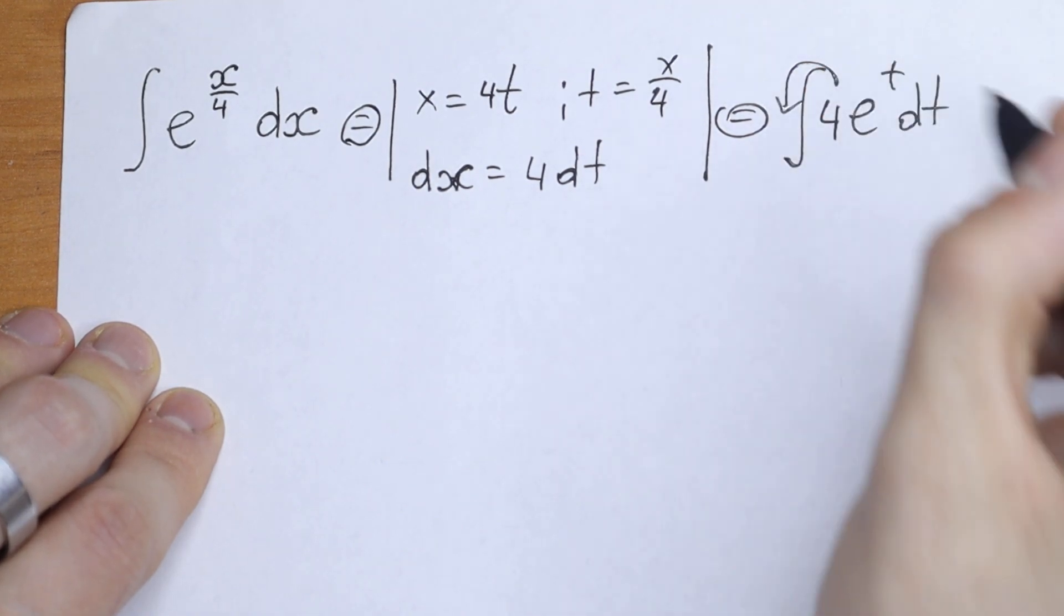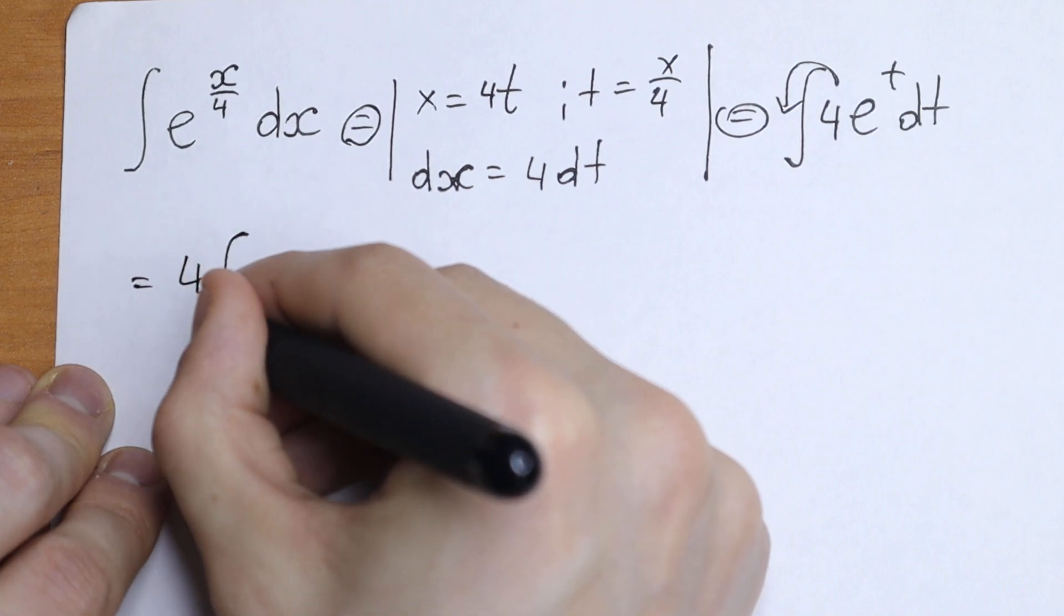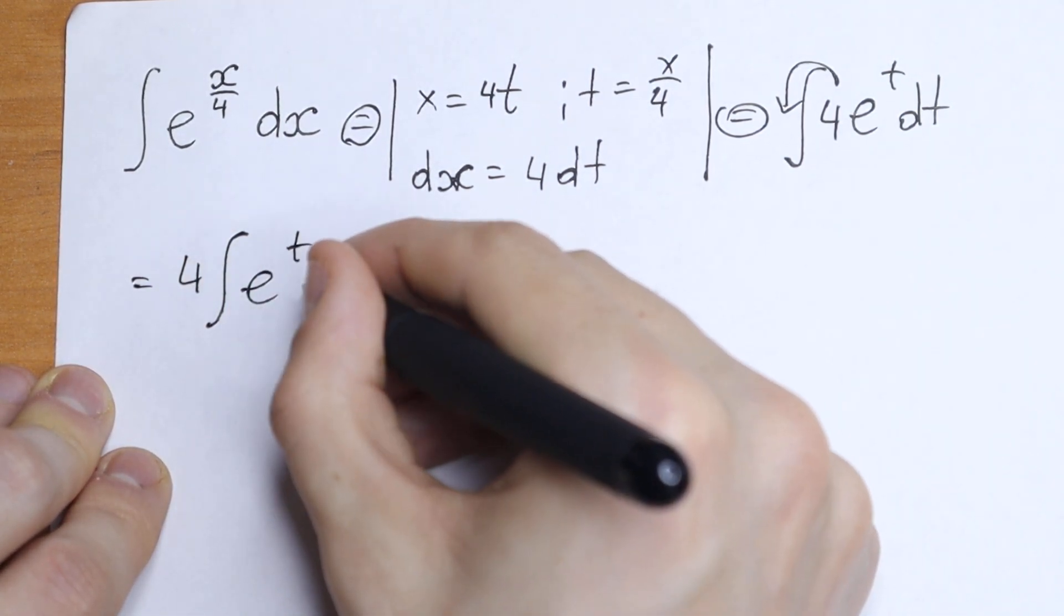Let's bring the 4 to the beginning. As a result, we'll have our classic case: 4 times the integral of e to the power t dt.